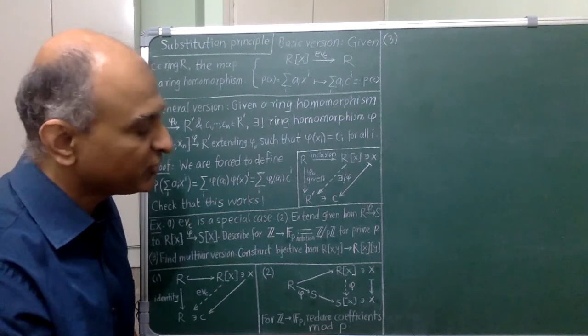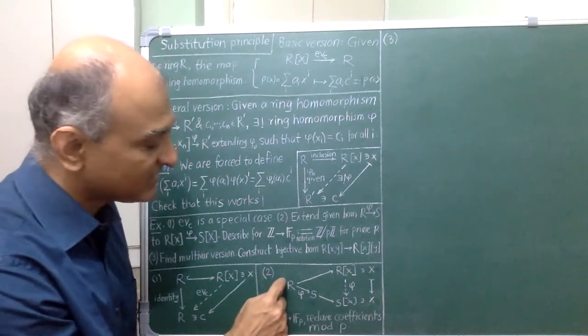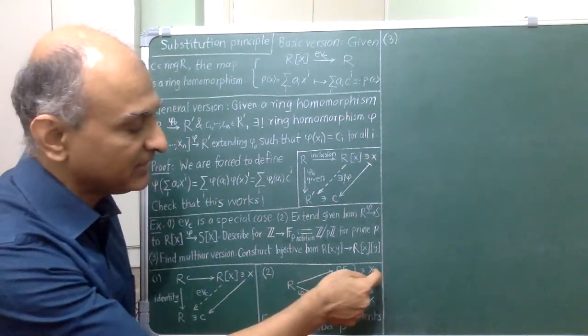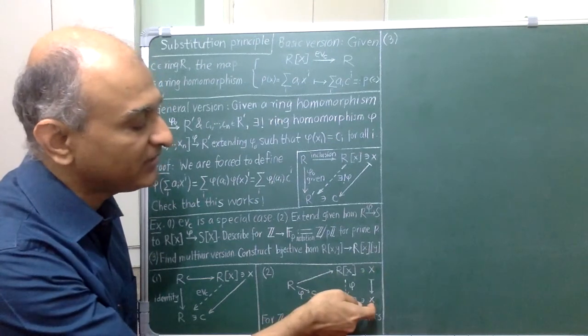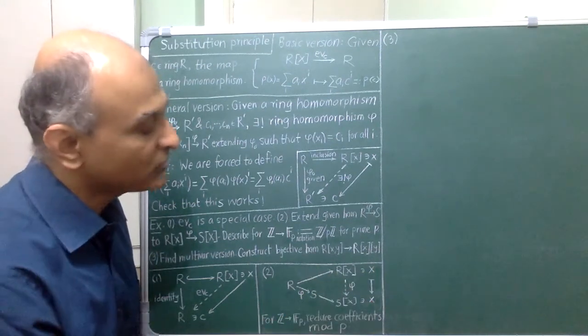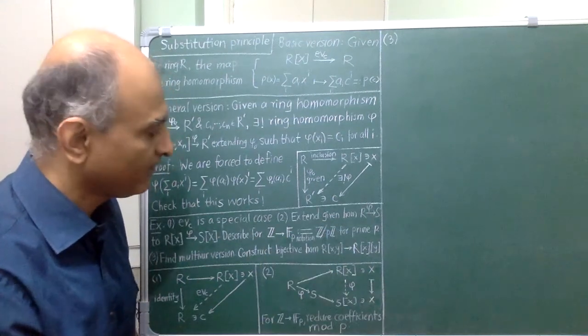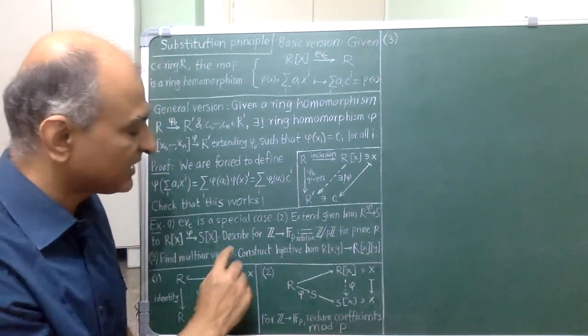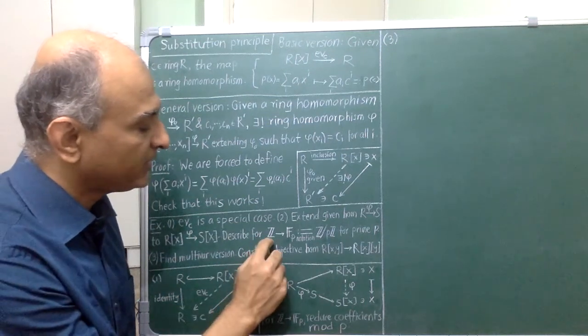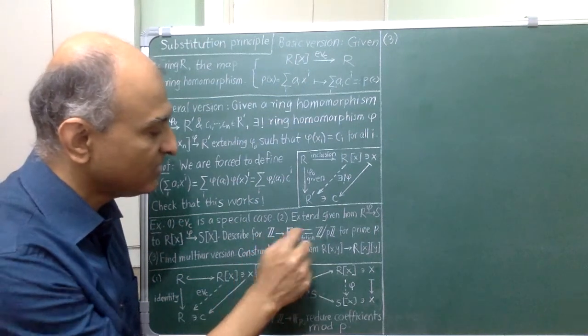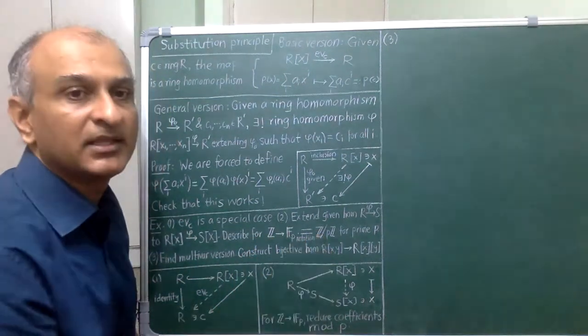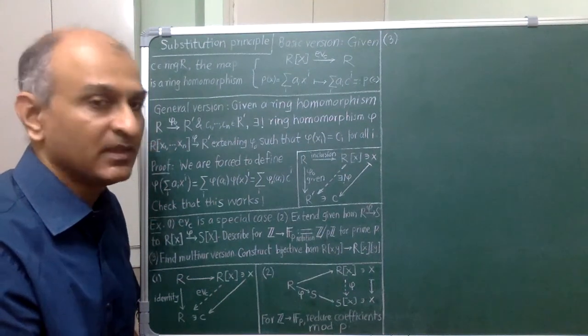Now, by substitution principle, I can extend this to R[x] by sending x up top to anything I like down here but of course, I choose to send x to x. I am also asked to describe this explicitly for the particular homomorphism from Z to Z mod pZ namely reduction modulo p.